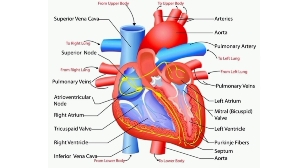The muscle fibers which form the conducting system are formed by modified cardiac muscle fibers. Impulses from the sinoatrial node are transmitted to the atria directly. However, the impulses are transmitted to the ventricles through various components of the conducting system.